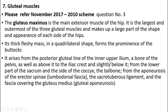It arises from the posterior gluteal line of the inner upper ilium — a bone of the pelvis — as well as above it to the iliac crest and slightly below it, from the lower part of the sacrum and side of the coccyx, from the aponeurosis of the erector spinae, the sacrotuberous ligament, and the fascia covering the gluteus medius.